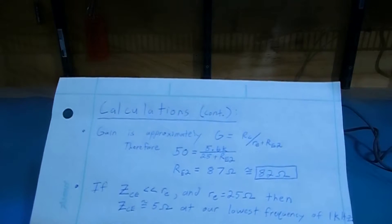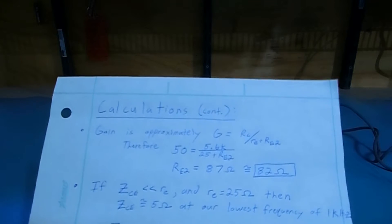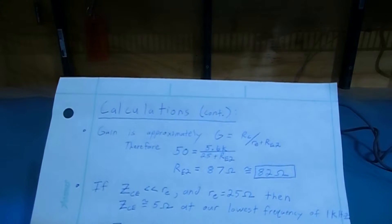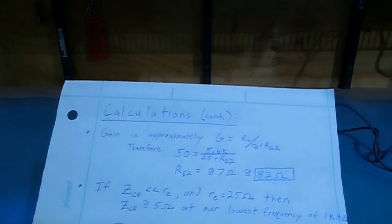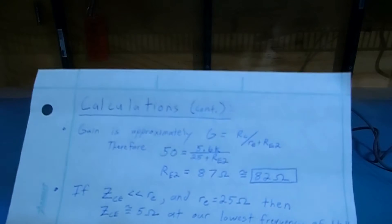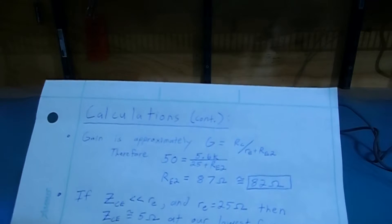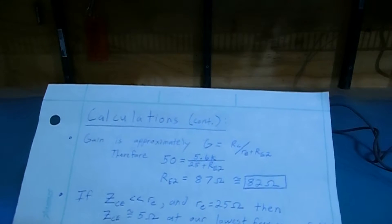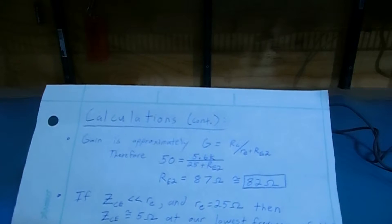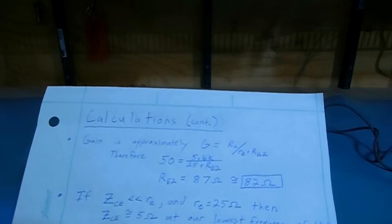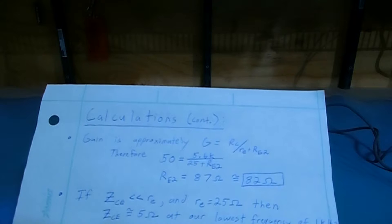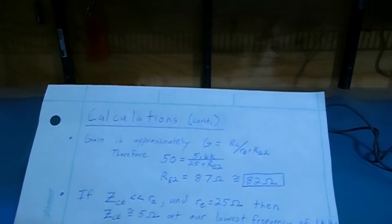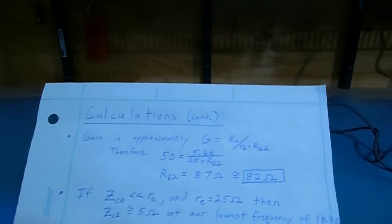If you put little re into that equation and solve for RE2, you'll find it equals 87 ohms, which is close to the standard value of 82 ohms. And from there, you can see that if we had ignored little re like you typically do for the common emitter circuit that was shown at the beginning of the video, our error would be significant because 25 is a significant portion of 82.